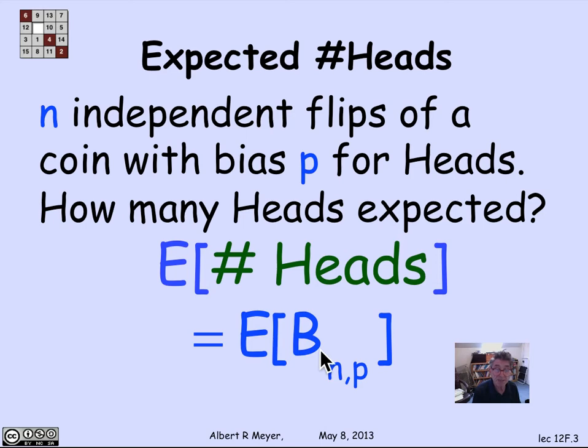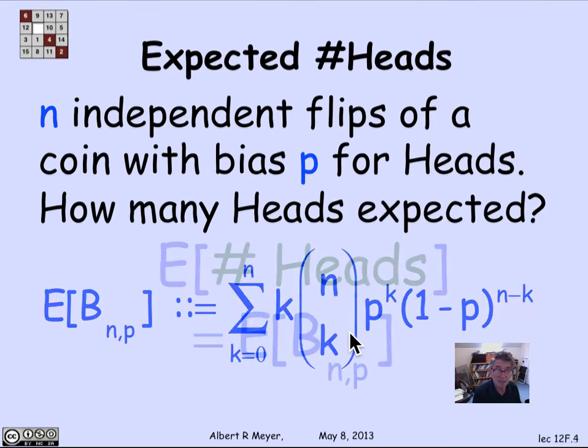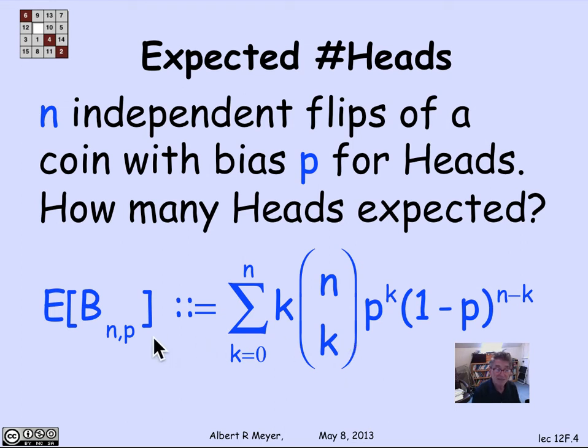So we're asking about the expectation of the binomial variable B_{n,p}. Well, let's look at the definition. The definition of B_{n,p} is it's the sum over all the possible values of b, namely all the numbers from 0 to n, that's k, of the probability of getting k heads. And this formula here is the probability of getting k heads, which we've worked at previously. n choose k times p^k times (1-p)^(n-k).